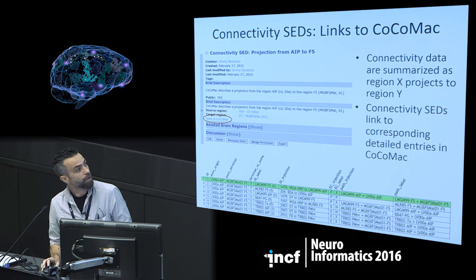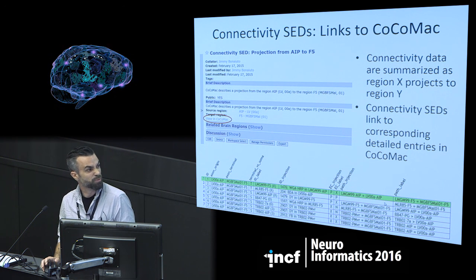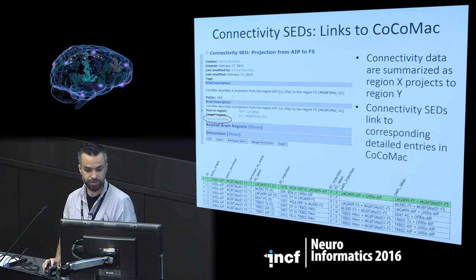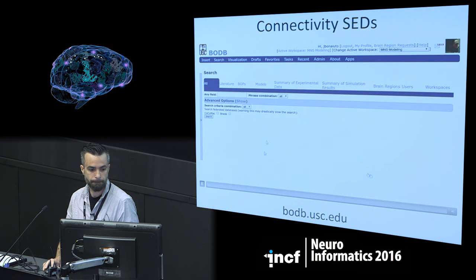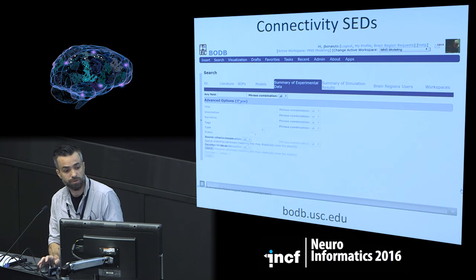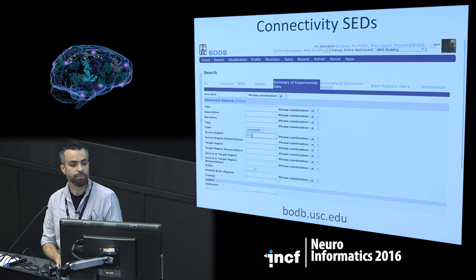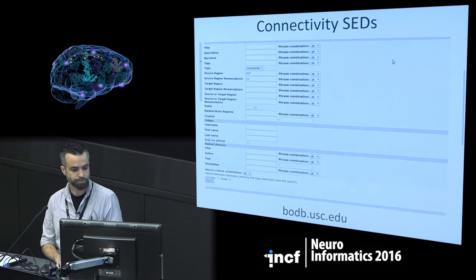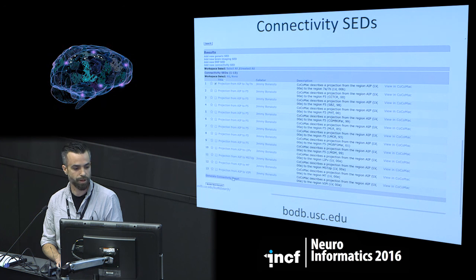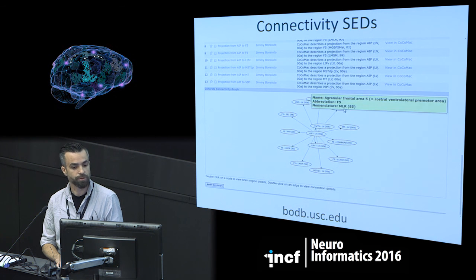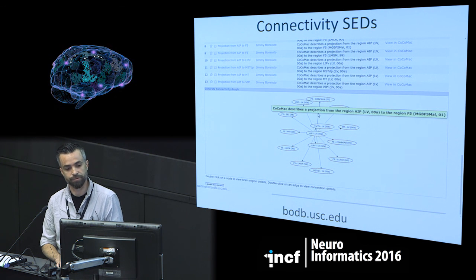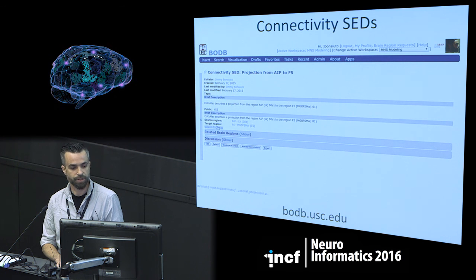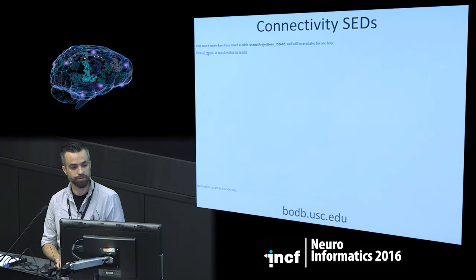You can see what experiments support a connection, what injection and type of tracers were used, where they were injected, where they saw the labeling, and what path it took through the brain. In the demo, we search through summaries of empirical data — here looking for connectivity summaries from area AIP to other regions. You can see all the results along with links to COCOMAC, generate a clickable graph, navigate around, view different regions and connections, and double-clicking on any edge takes you to that connection's page.